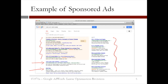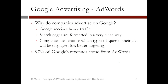Why do companies advertise with Google? There are several reasons. As we saw a few slides back, Google receives a lot of internet traffic, as many users conduct searches on Google, so an ad placed on Google could be seen by a very large number of users. At the same time, Google's web pages and the ads on them are formatted in a very clean, visually appealing way. Lastly, companies that advertise with Google can select which queries their ads will be displayed for. This is a very useful feature because a company can then target specific customers that they think are likely to buy their product or use their service.